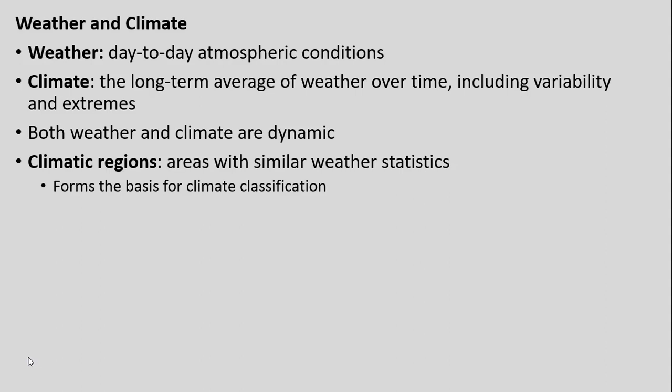Climate includes variability and extremes. Both weather and climate are dynamic. We talked about how weather patterns can change over time — if you check the weather daily or what it's going to be for the next several days, those are typical weather patterns you usually get, perhaps in seasons throughout the year.